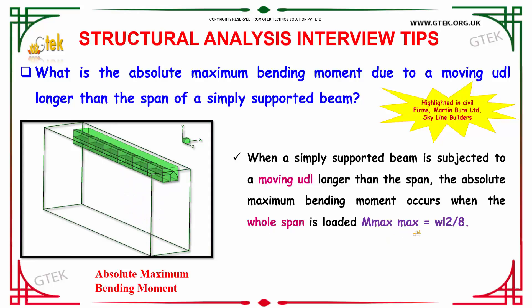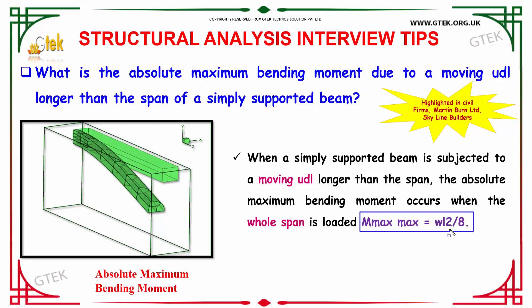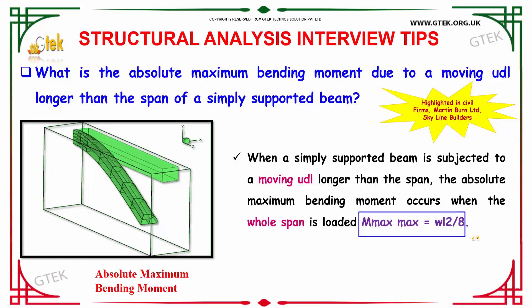M-max is equal to WL squared by 8. This is the condition at which the maximum bending moment occurs — when the whole span is loaded — so the absolute maximum bending moment occurs at this point.